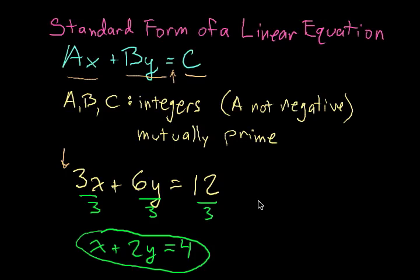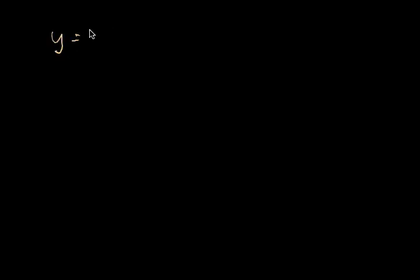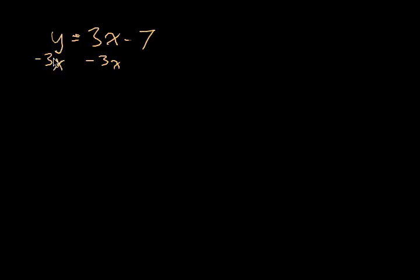Let's try a few examples. How about something in slope-intercept form? y equals 3x minus 7. To get this into standard form, the x term is in the wrong spot, so we're going to subtract 3x from both the left and the right. When we subtract 3x from the left, we'll put it in the right order, giving us negative 3x plus y equals negative 7.